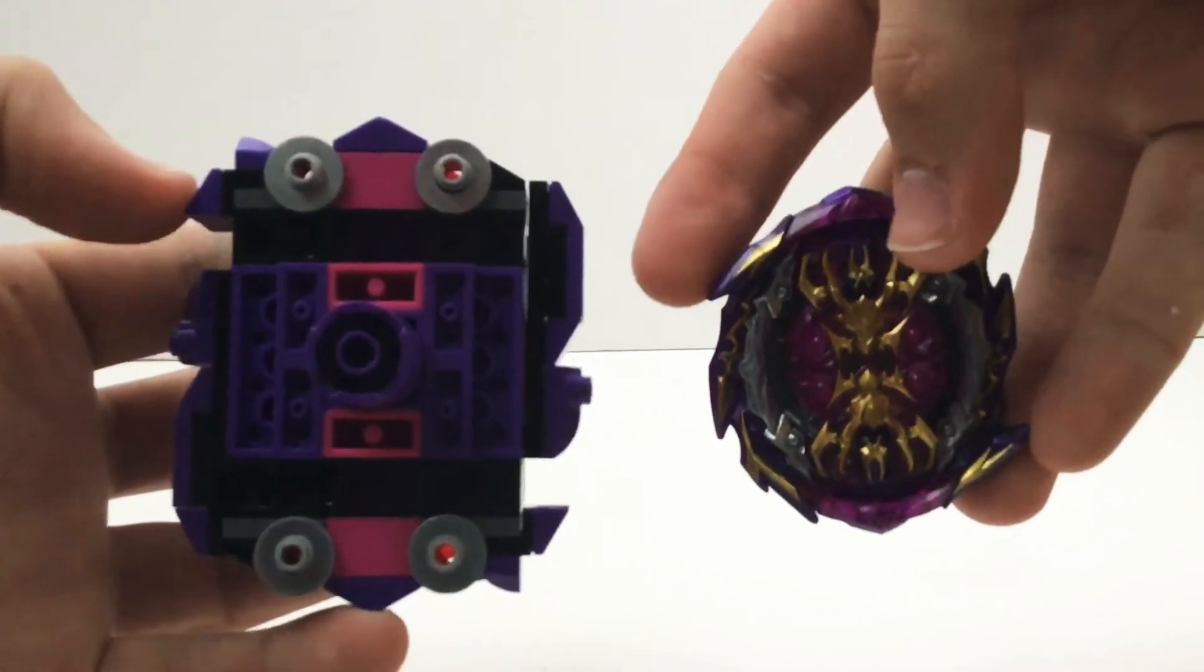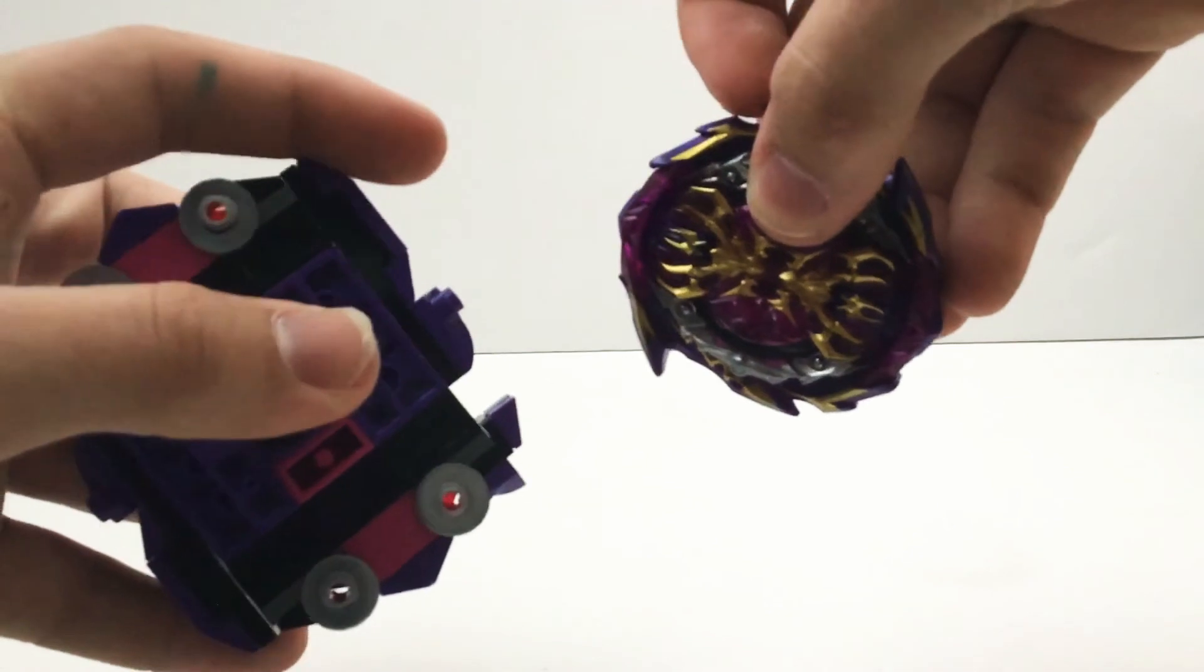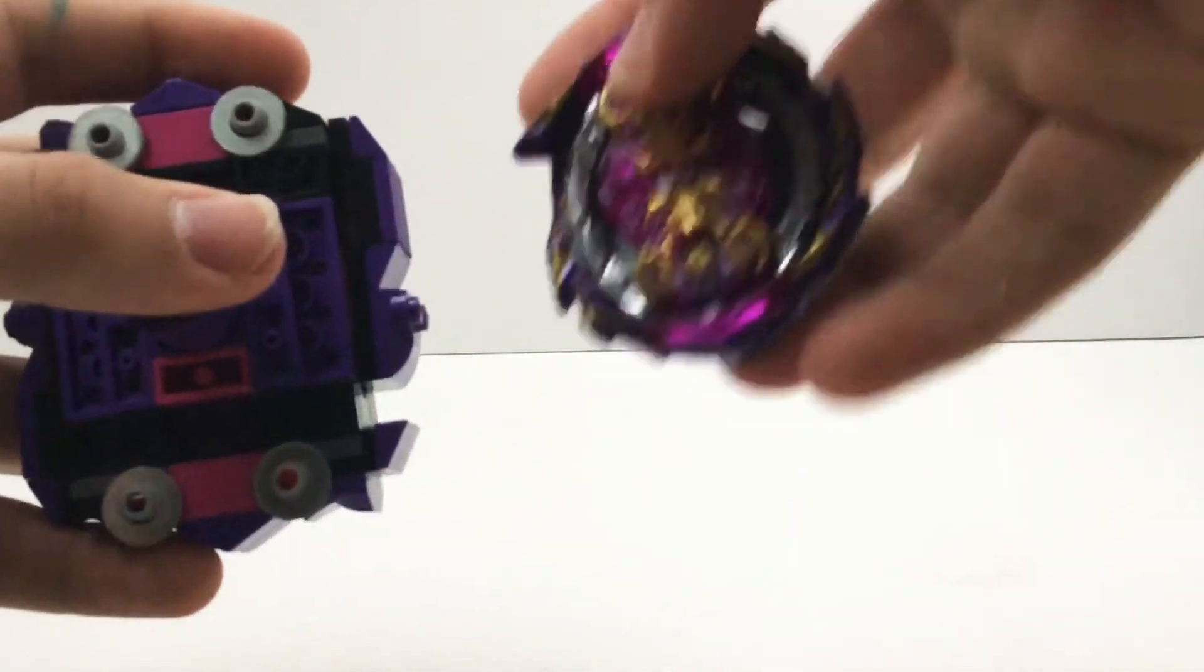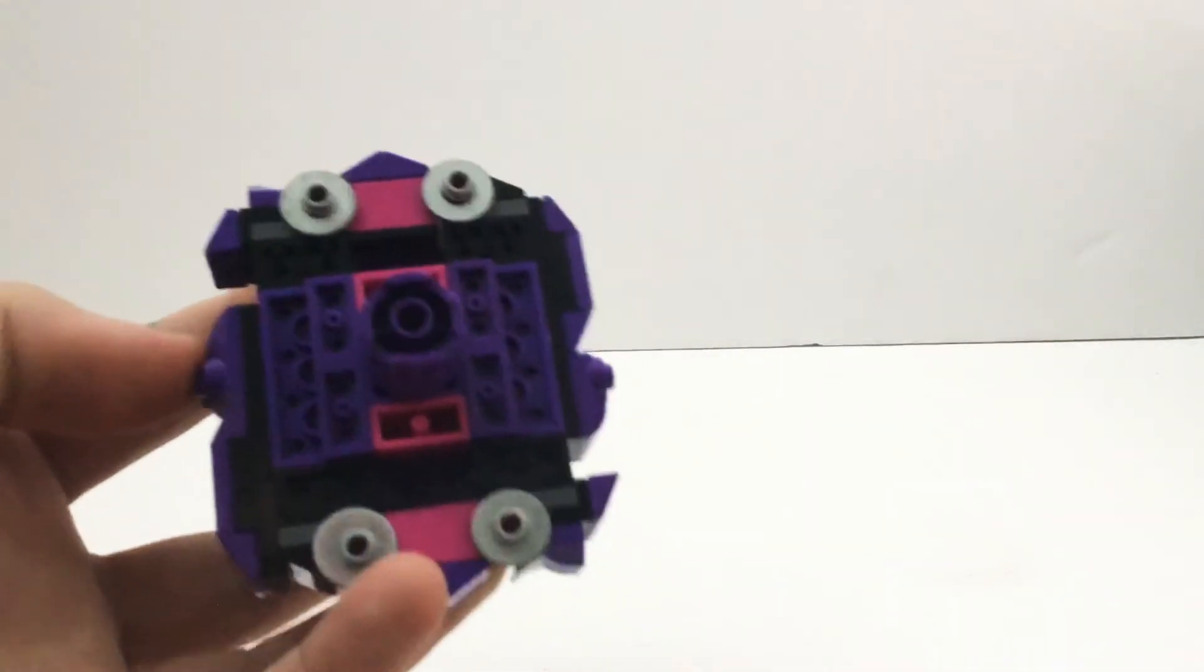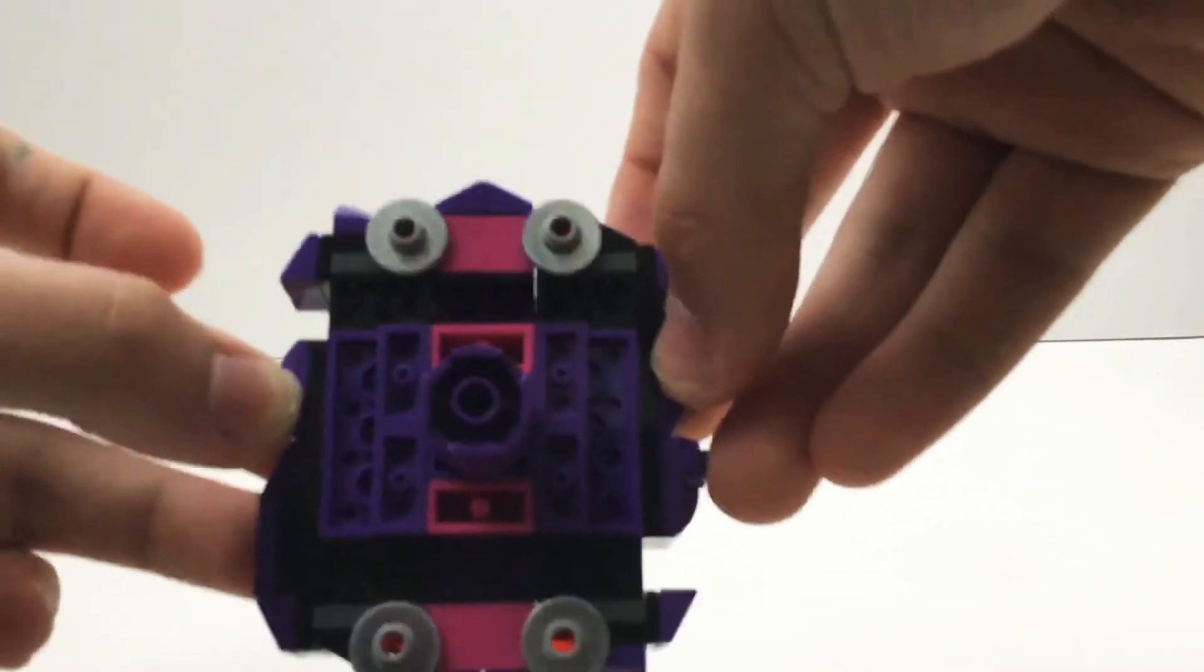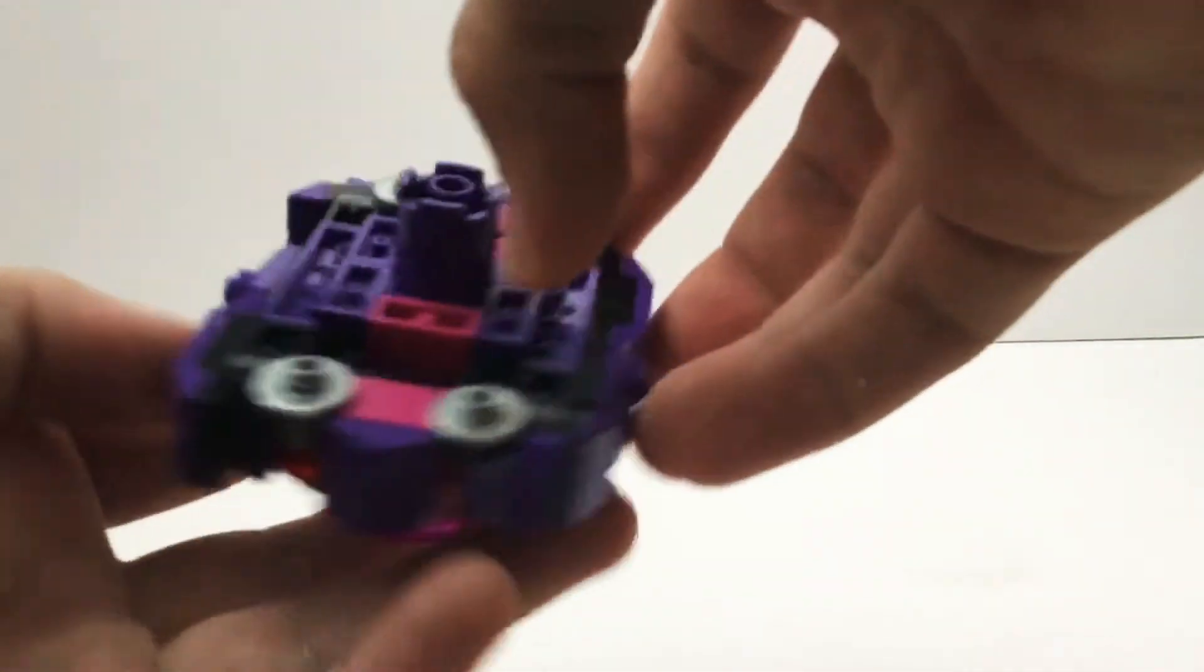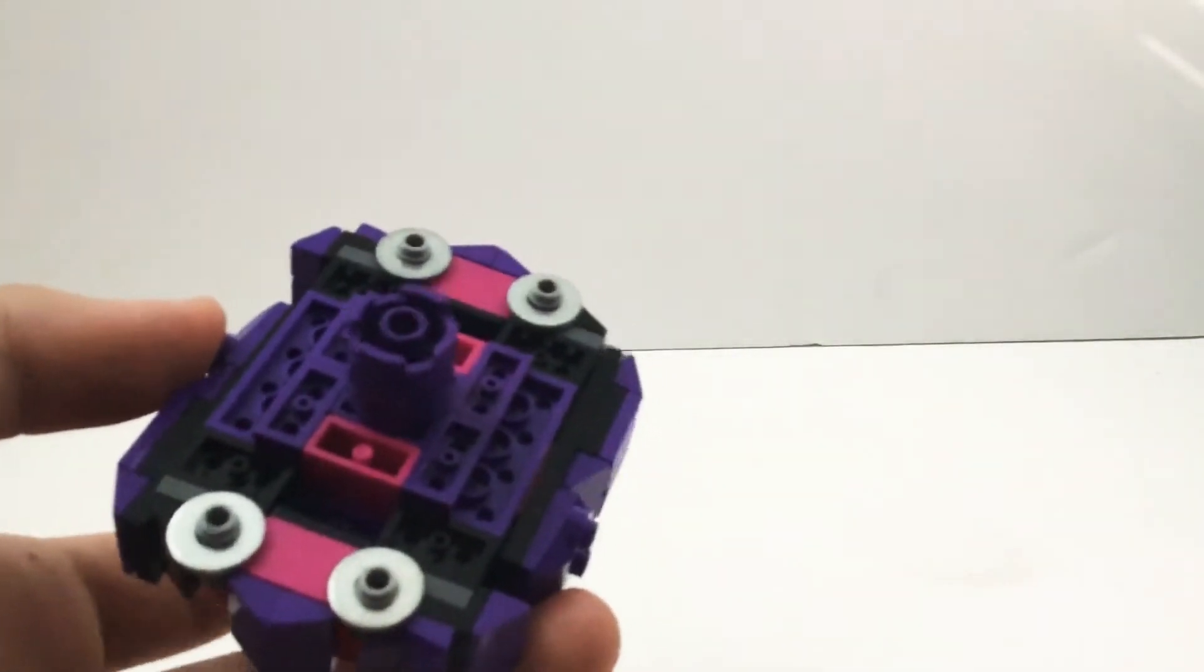You can see this thing here, the point and then the contact points over here. This one however has a gimmick to where whenever it spins the sides pop out and they retract whenever you pick it up. It works pretty well.